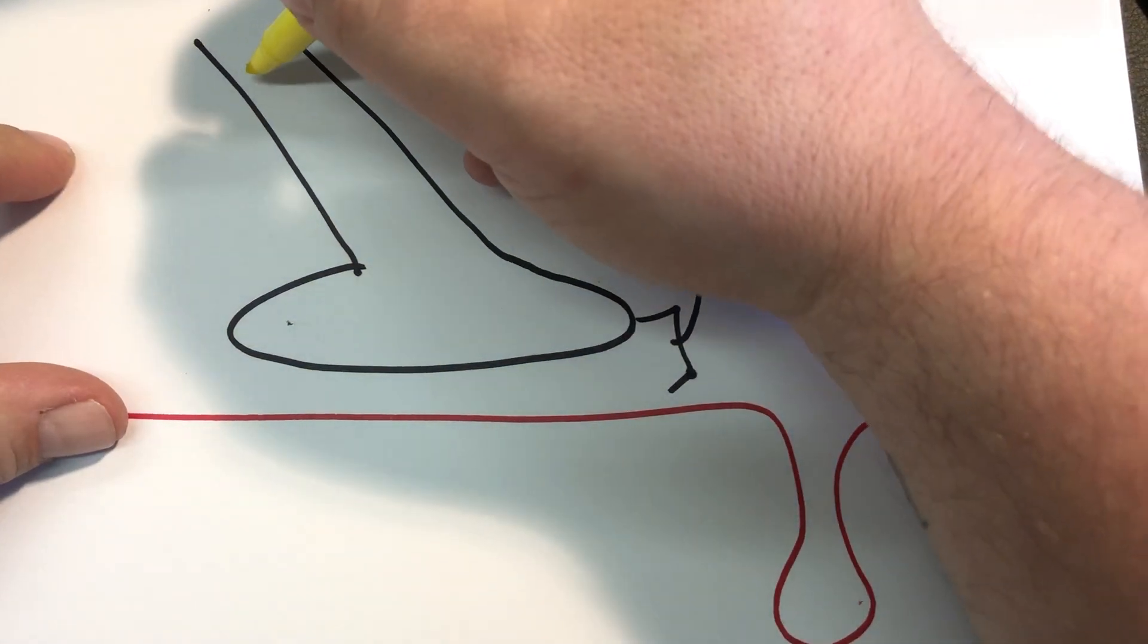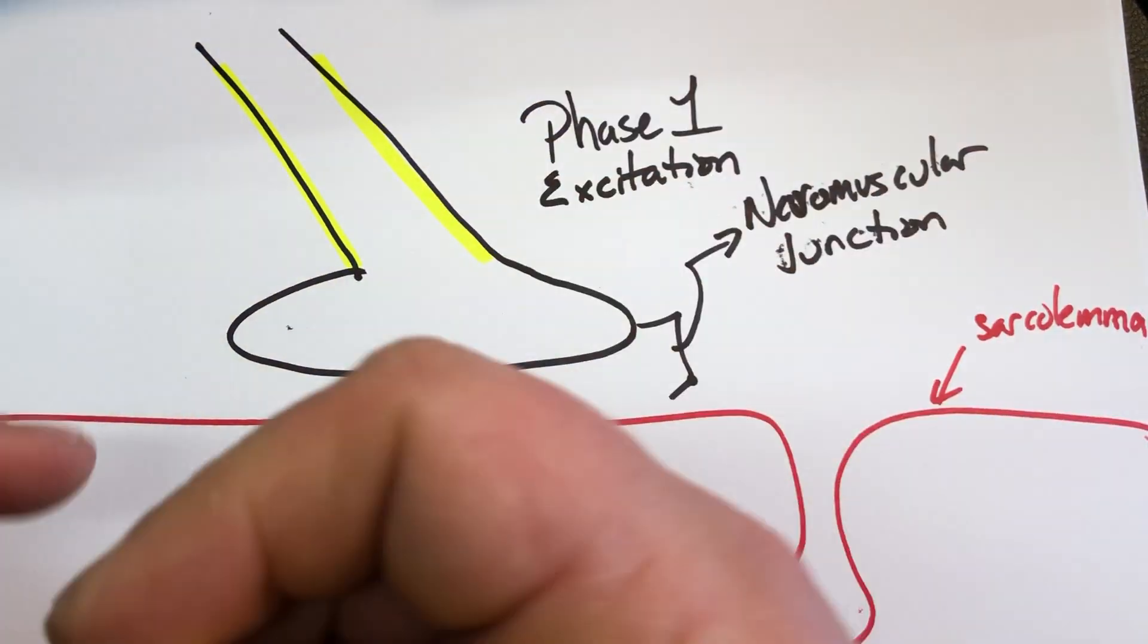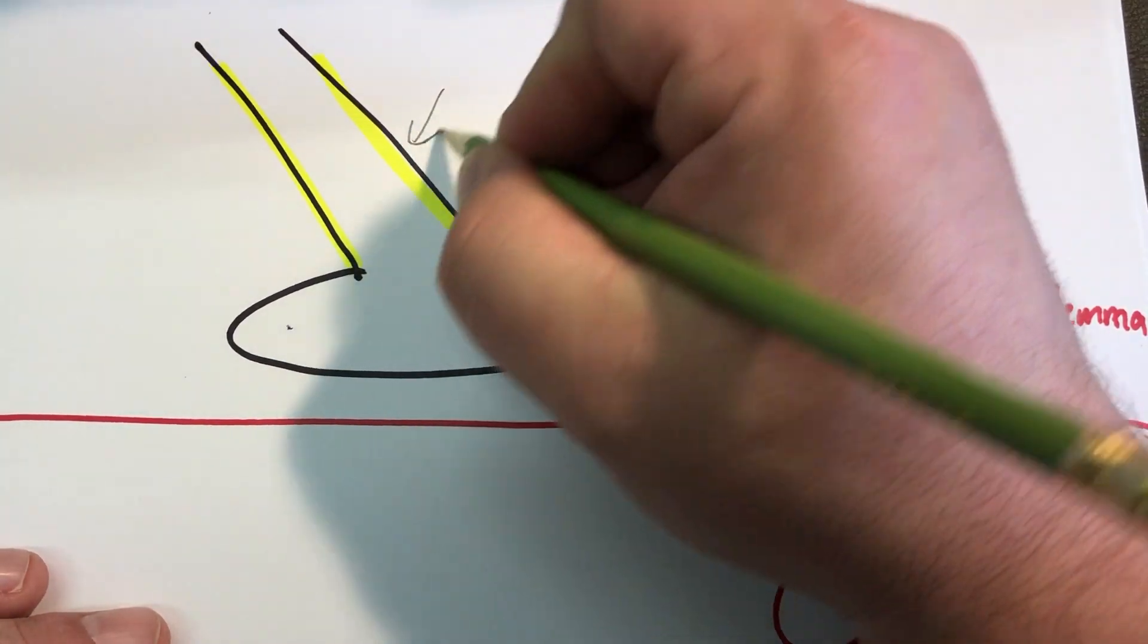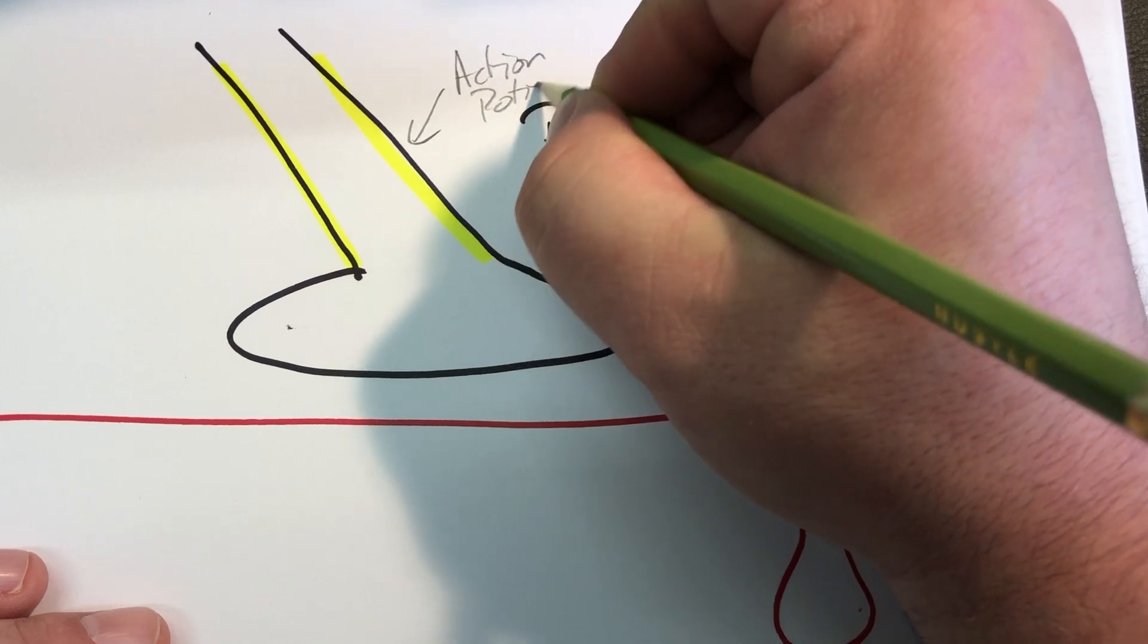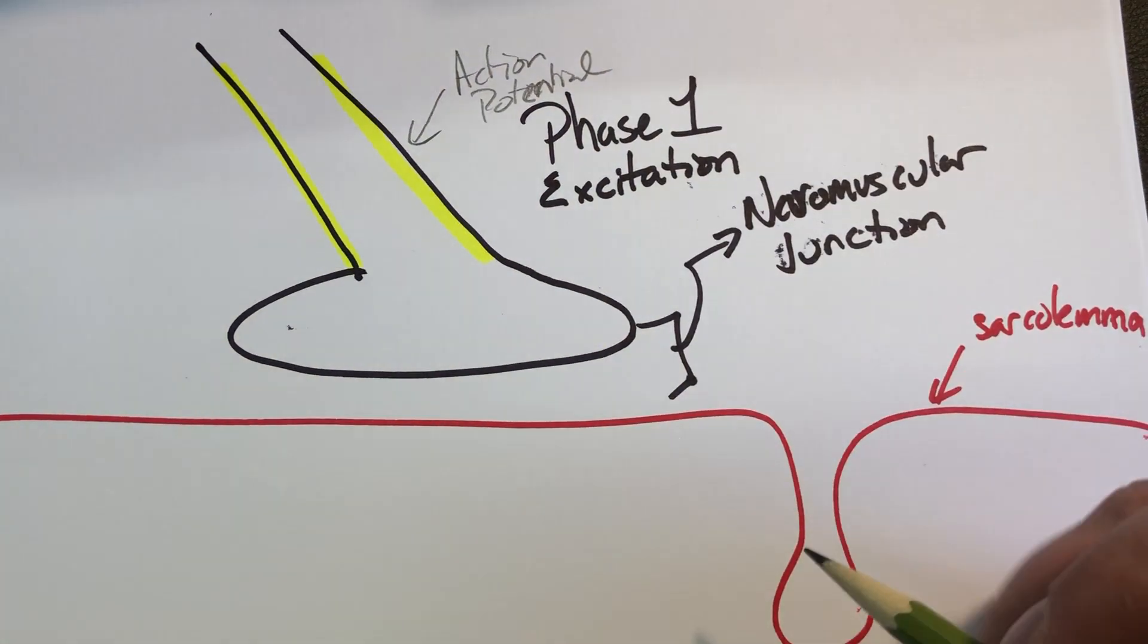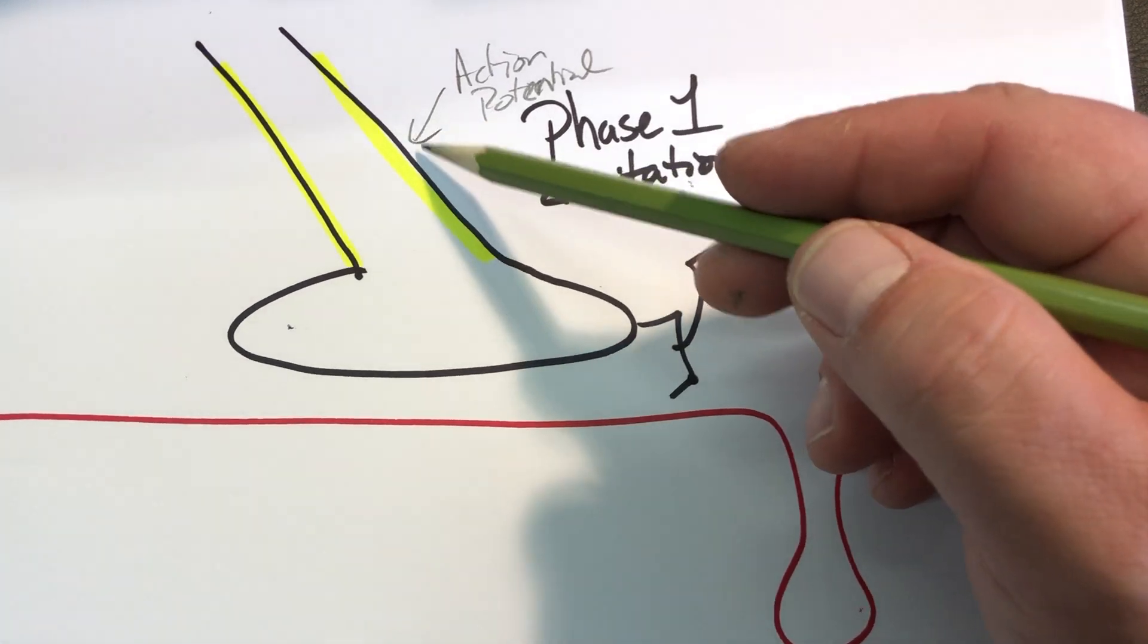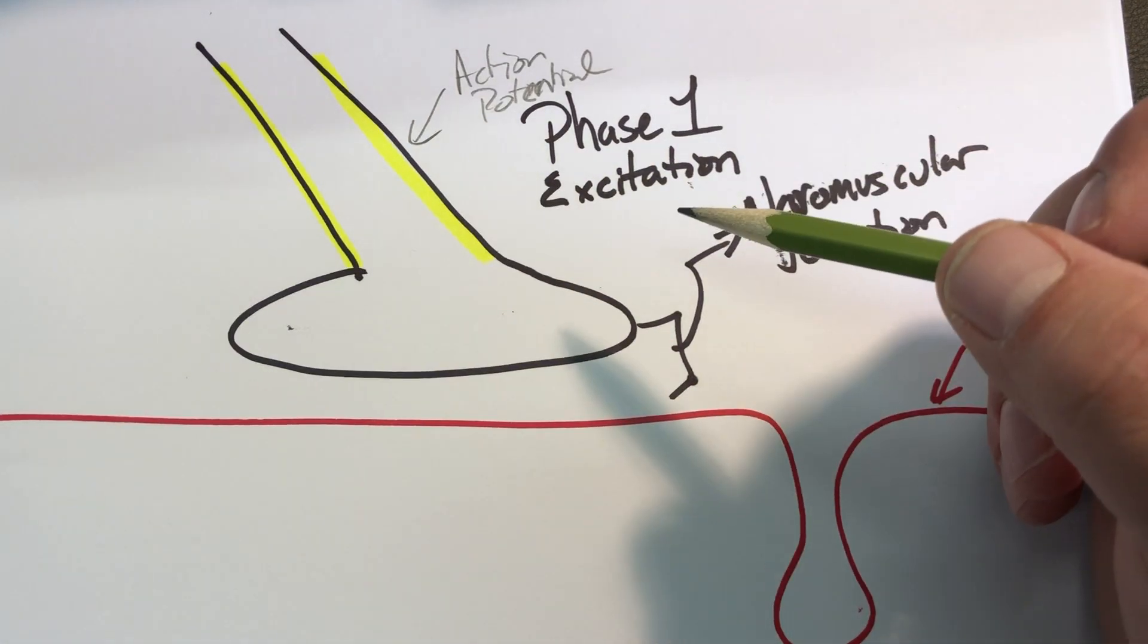So as we previously described, what you would have is an action potential running down the length of the axon. So here's our action potential. So what happens when this action potential gets to this presynaptic space, okay?